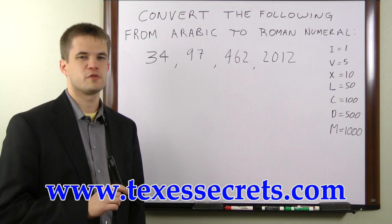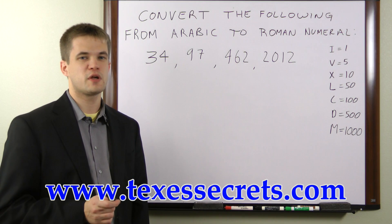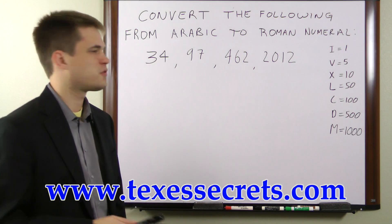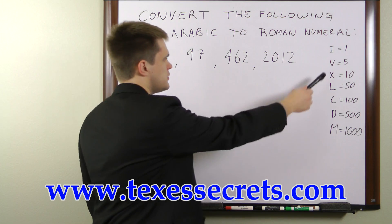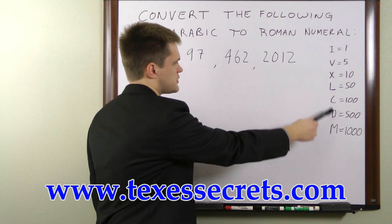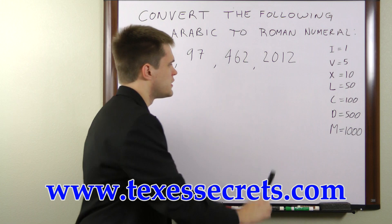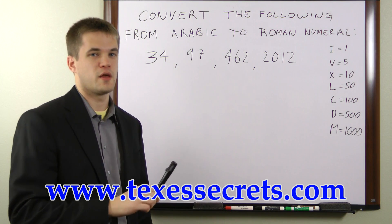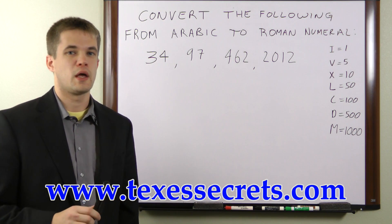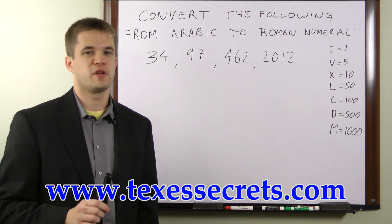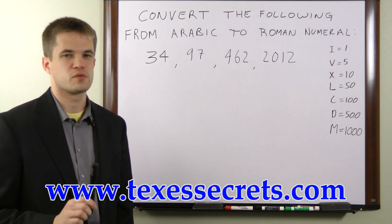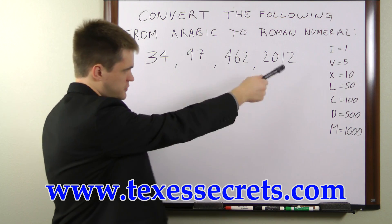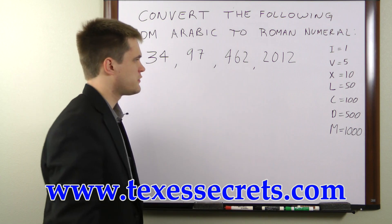When you're working with Roman numerals, there are really three things you have to remember. You have to remember the value of each of the symbols involved, you have to remember the rules for adding them, and you have to remember the exceptions to those rules. The values, obviously, are written over there.